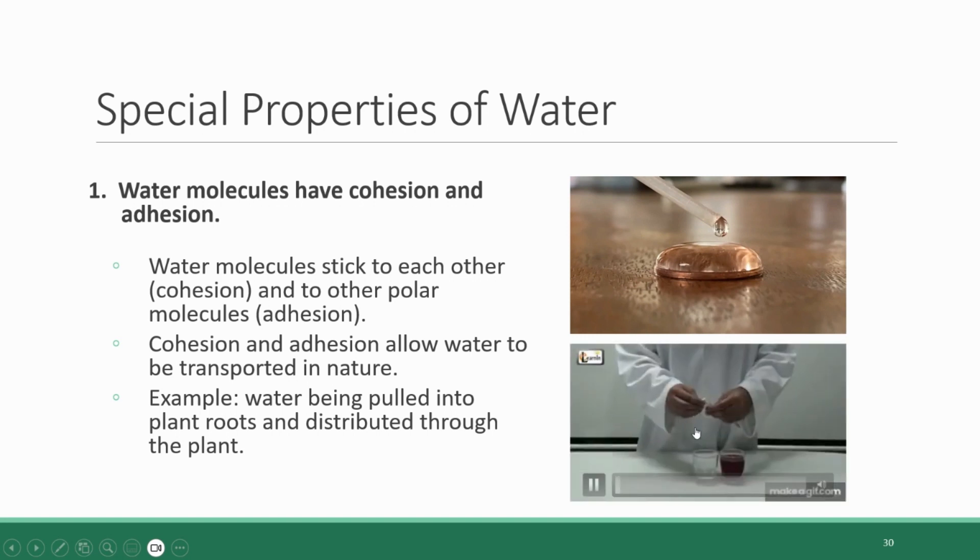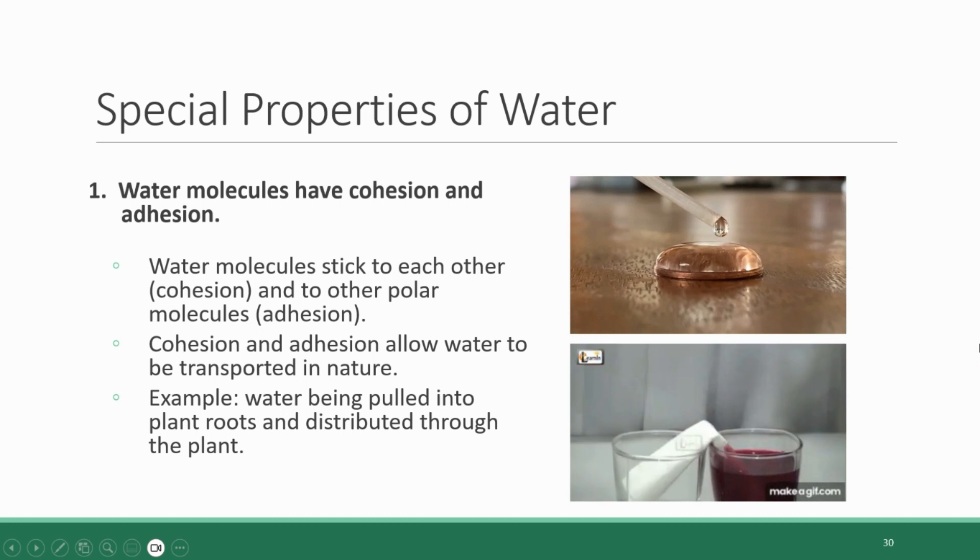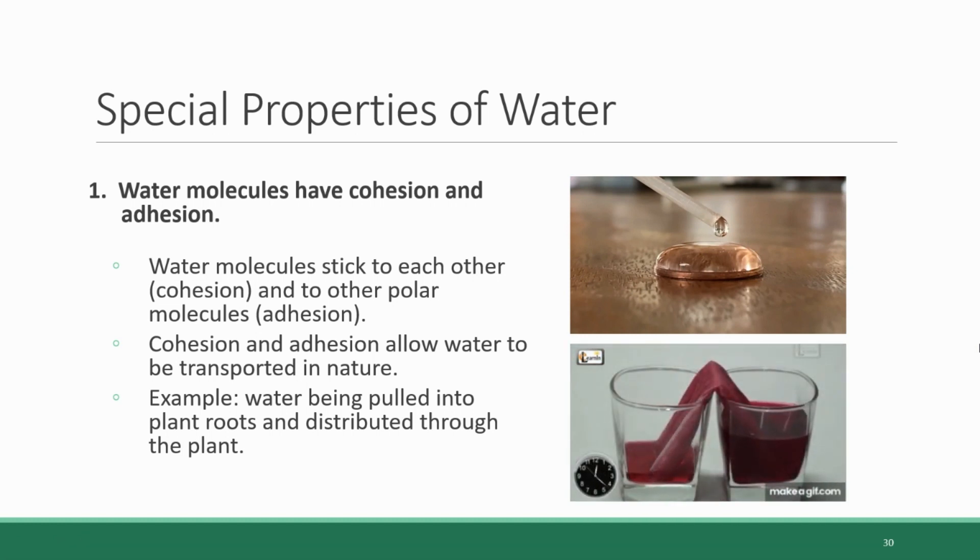In this demonstration, we see a paper towel dipped into a cup of colored water on the right and an empty cup on the left. The water gets drawn up into the material of the paper towel, and gravity pulls it into the empty cup. Water is pulled into the paper towel because of adhesion to the paper towel, and cohesion pulls other water molecules along. This is exactly how water moves through plants and other living organisms.